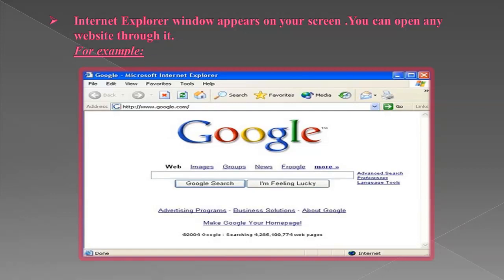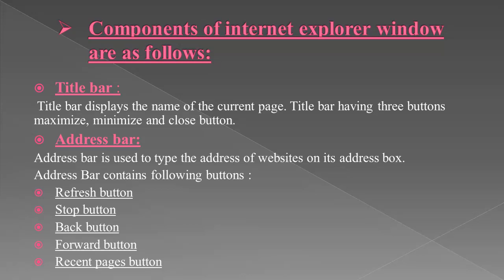Let's discuss some components of Internet Explorer. The first one is the title bar. Title bar displays the name of the current page. It has three buttons: minimize, maximize, and close button. The title bar is a small strip that extends across the top of a window and displays the title of the window.